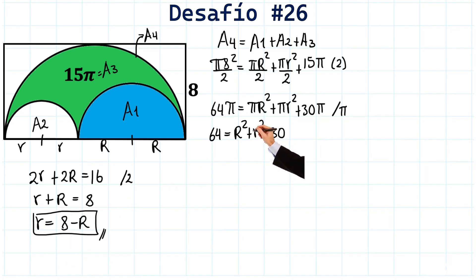And we can replace it here. But in our equation, we would have 64 equals R squared plus. Instead of this, we put this. Then we have 8 minus R squared and plus 30. Fantastic.